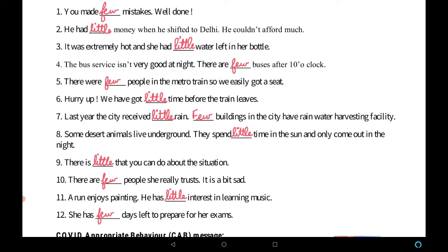The bus service isn't very good at night — there are ___ buses after 10 o'clock. 'Buses' is countable, so we use 'few' — there are few buses after 10 o'clock. There were ___ people in the metro train so we easily got a seat — very few people were there, so we use 'few people.'